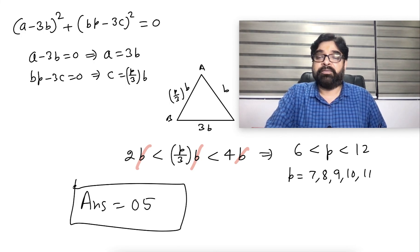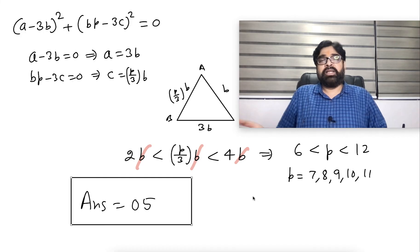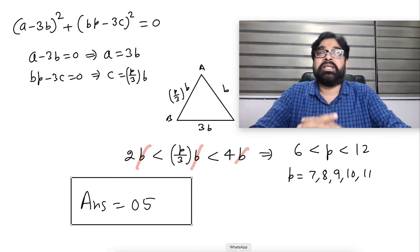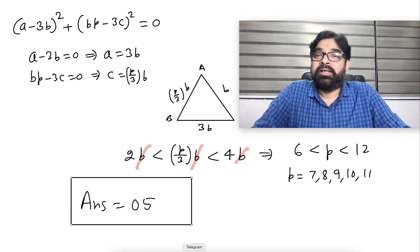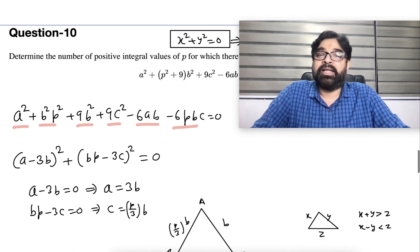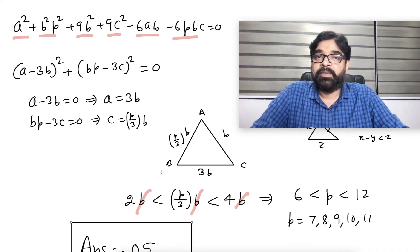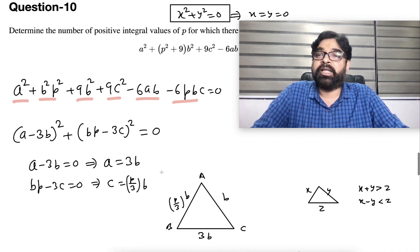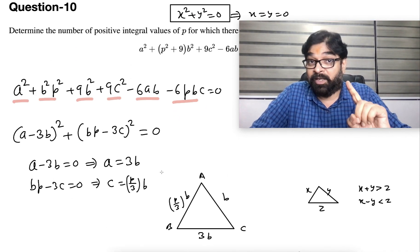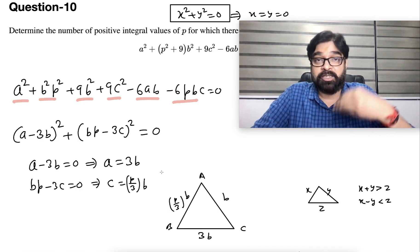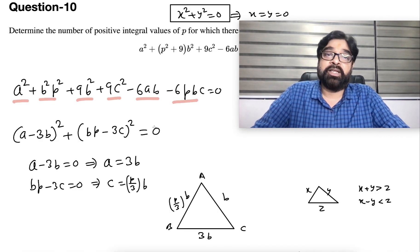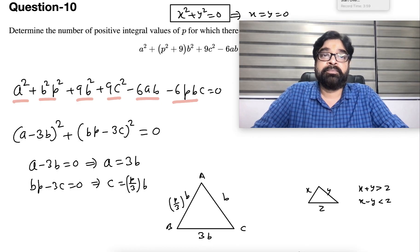So the answer will be 5. Very simple question. Only thing is the equation looks dirty that you have to correct it, and that easily can be made into perfect squares. So all these concepts are involved here. This was question number 10, and that is the end of section one, the two marks questions we discussed.